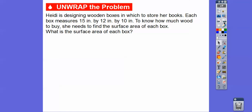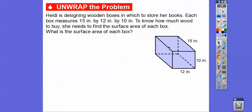Heidi is designing wooden boxes on which to store all of her books. Each box measures 15 inches by 12 inches by 10 inches. Think of a box — that's a prism. To know how much wood to buy, she needs to find the surface area of each box. So what is the surface area of each box? Here's her box — 15 inches by 12 inches by 10 inches.